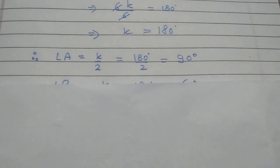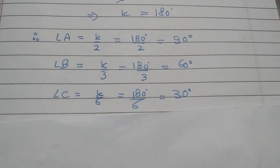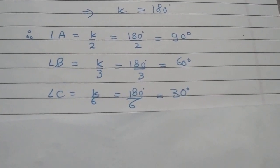K's value came out to be 180. So A's value is 90, B's value is 60, and C's value is 30. That's it. Thank you for watching.